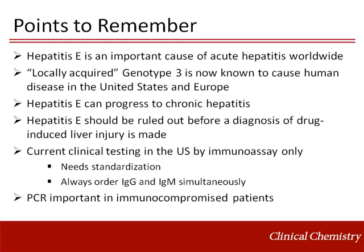In summary, hepatitis E is an important cause of acute hepatitis worldwide, with millions of cases each year. In the United States and Western Europe, infection with genotype 3 predominates. Immunocompromised patients may progress to chronic hepatitis E, which can lead to long-term liver damage. In immunocompetent patients, hepatitis E is ideally ruled out before a diagnosis of drug-induced liver injury is made. Current clinical testing in the U.S. is by immunoassay only, which needs improved standardization. Because of false positives with IgM, the IgG and IgM antibodies should always be ordered as a pair. And finally, PCR testing, when available, may be useful in your immunocompromised patient population.